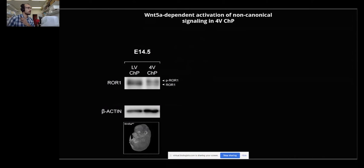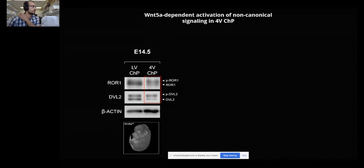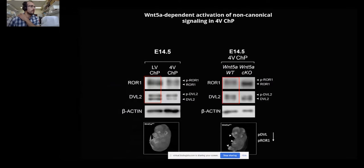Moreover, we were interested in the activation of different WNT pathways in this developmental context. Here you can see the analysis of these components between fourth ventricle and lateral ventricle choroid plexus. Upon closer inspection, we noticed that in the fourth ventricle choroid plexus there is specific activation of non-canonical WNT components such as signaling scaffold protein DISHEVELLED 2 or membrane protein ROR1. Importantly, WNT5A depletion led to loss of this non-canonical signaling activation and observed phosphorylation of ROR1 and DISHEVELLED 2.